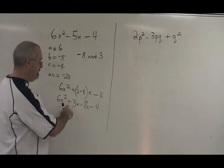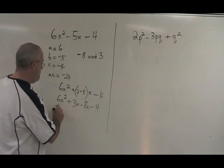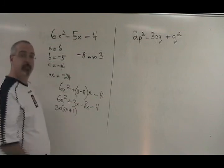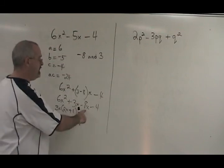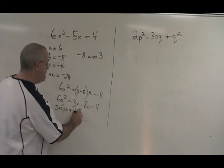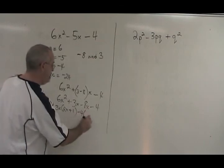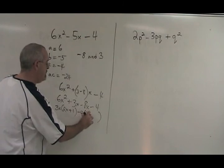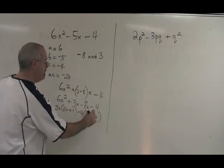The greatest common factor of 6x squared and 3x is 3x. So we factor it out and we get 2x plus 1. The greatest common factor of negative 8x and negative 4 is negative 4. So I write minus 4 here. Factor it out. Negative 8x divided by negative 4 is 2x. Negative 4 divided by negative 4 is plus 1.